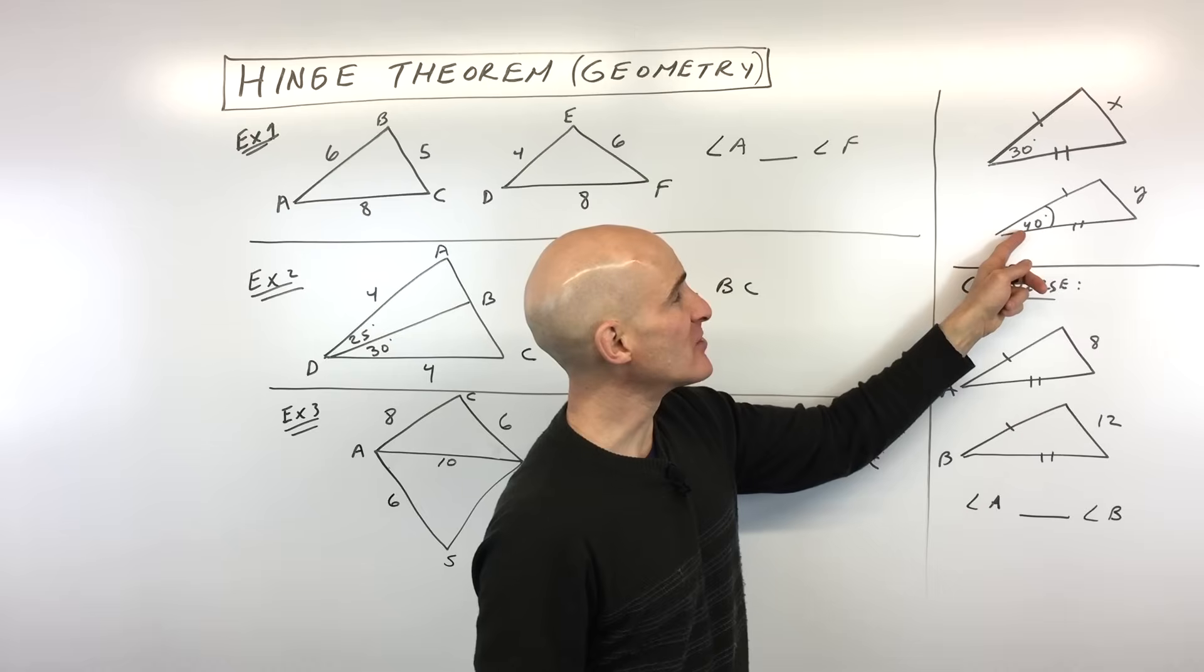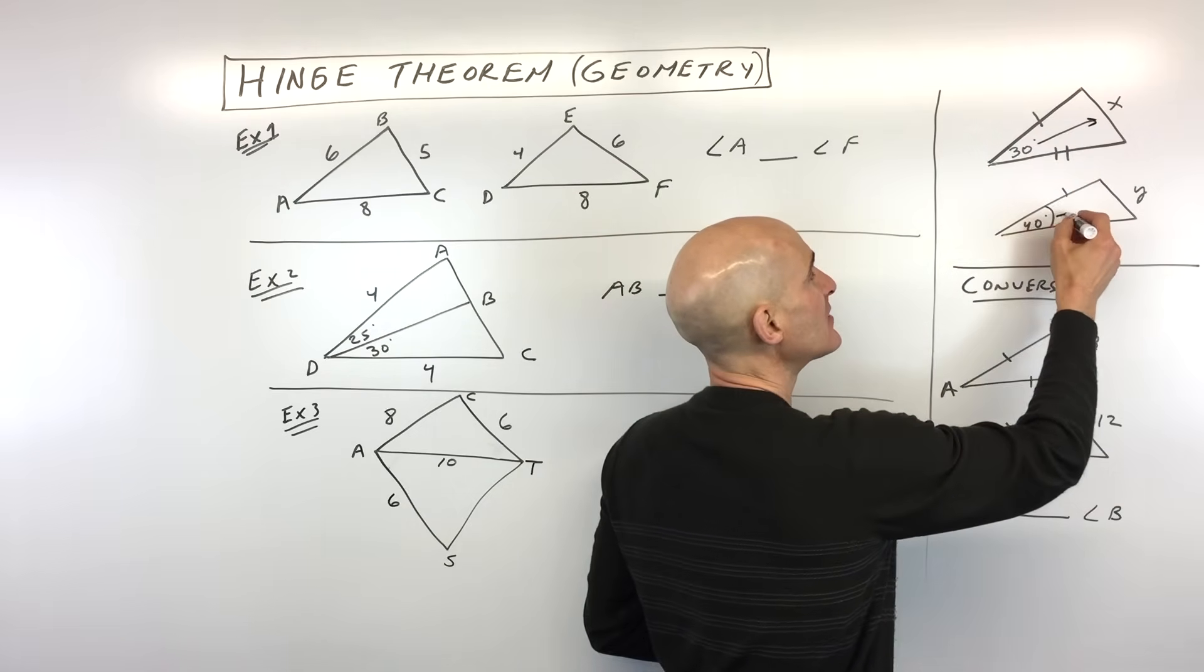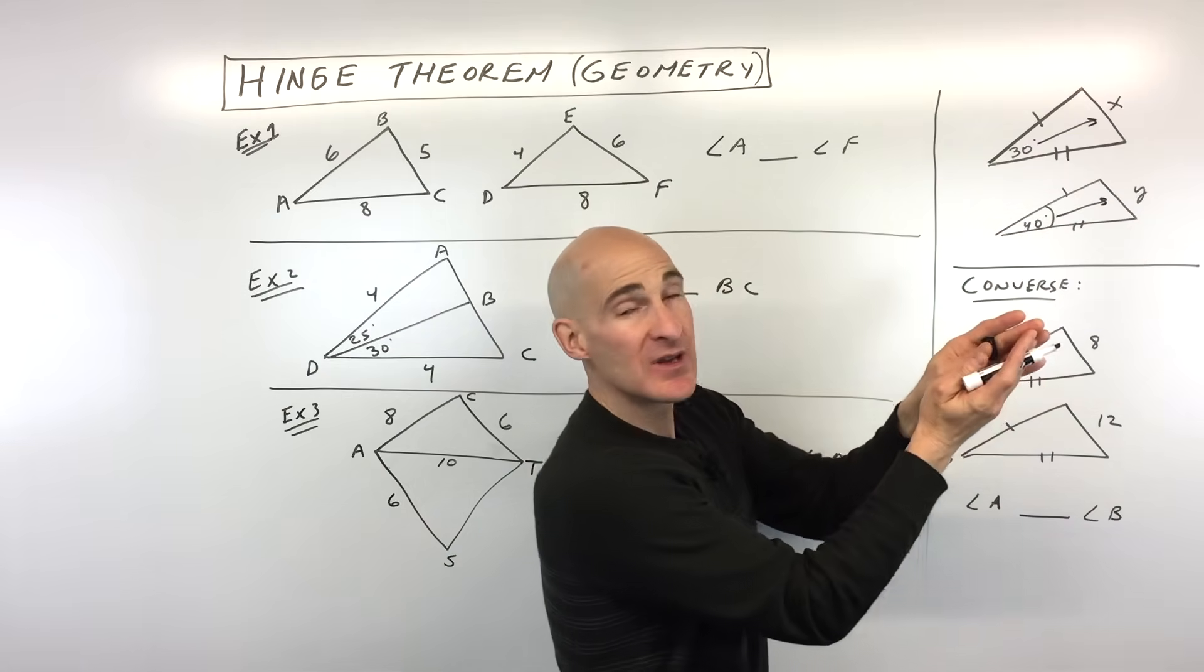You can see here this is 30, here this is 40. What we can do is we can look across, diagonally across from that angle.